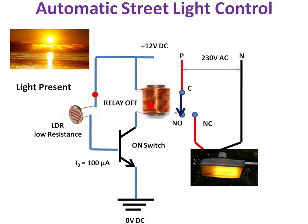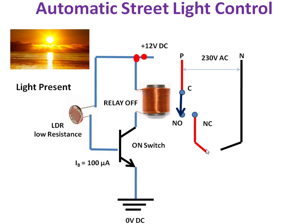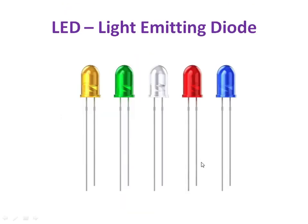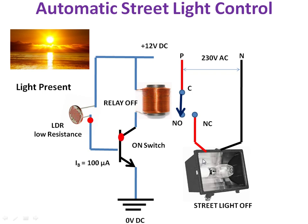When the relay is on, the switch is transferred to the NO position, so there is no current flow to the light and the street light is turned off. This is one of the applications of a transistor — here the transistor is acting as a switch.